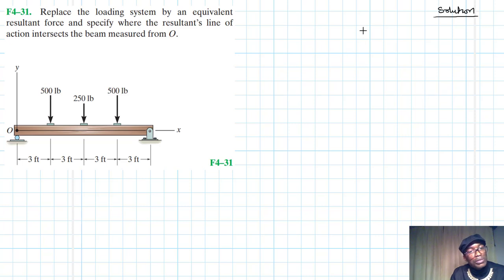So we have a beam, a simply supported beam with a loading system and we have been asked to find the resultant force and specify where the resultant's line of action intersects the beam measured from O. If you remember from our previous problems, we were finding the resultant and the couple moment at the same point. This time around we need to move the resultant so that it intersects the beam at a certain distance d.